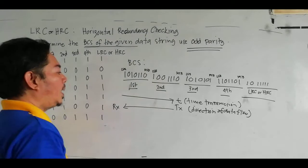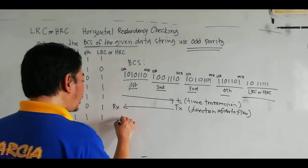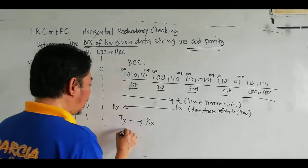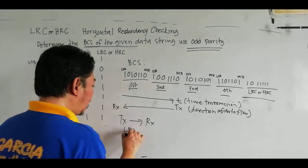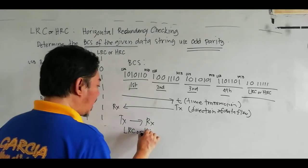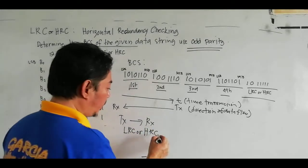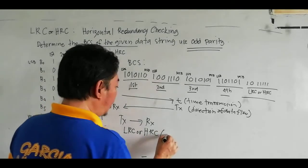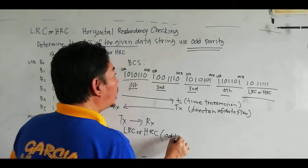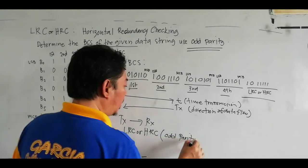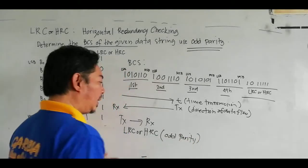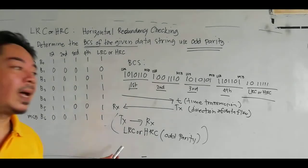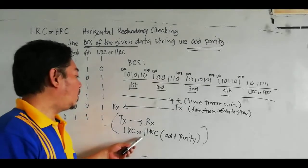The transmitter and the receiver shake hands — they agree — to use LRC or HRC with odd parity for error detection.